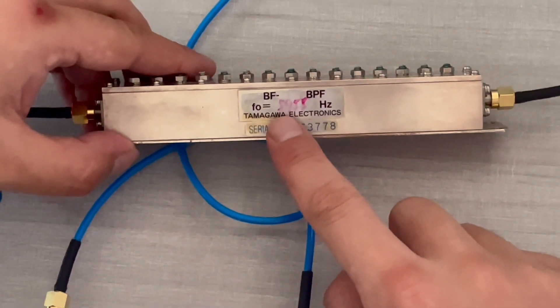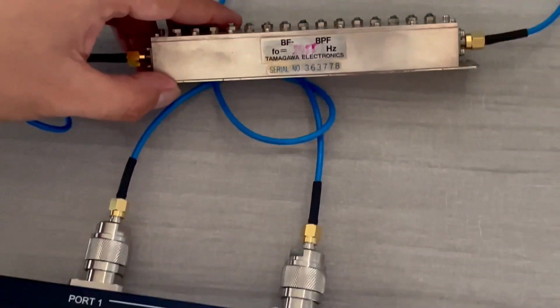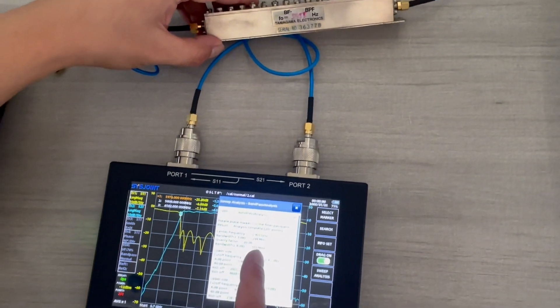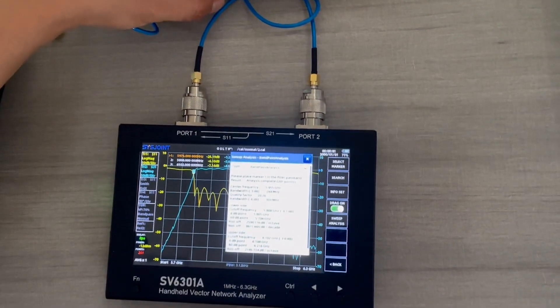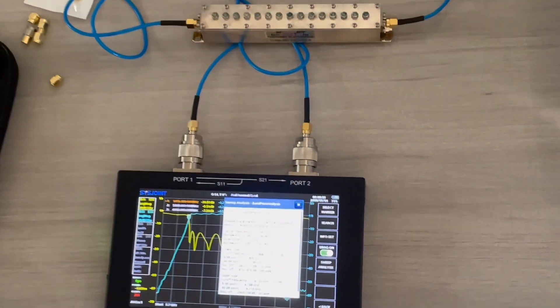The center frequency is 5.955 gigahertz. So 5.955 gigahertz is exactly the same. This is how you measure a bandpass filter with the 6 gigahertz VNA. Thank you.